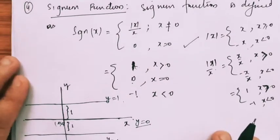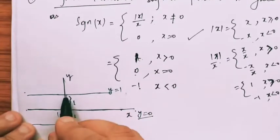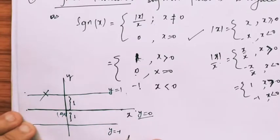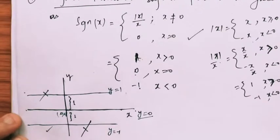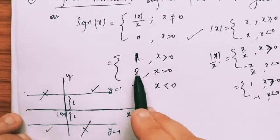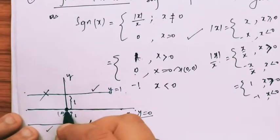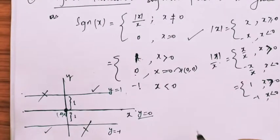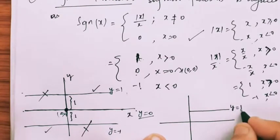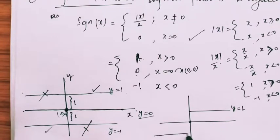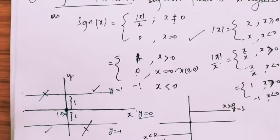Now we will look at in what region we need these lines. Y equal to 1 when X is positive — that is on the right-hand side — so only this part of the graph will be taken, the left part will be eliminated. Similarly, Y equal to minus 1 when X is less than 0 — so the left part is taken and the right part is eliminated. And at X equal to 0, only the point (0, 0) is taken. So the graph consists of Y equal to 1 for X greater than 0, the point 0 for X equal to 0, and Y equal to minus 1 for X less than 0.